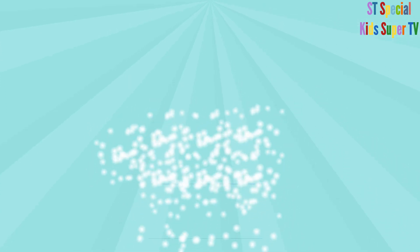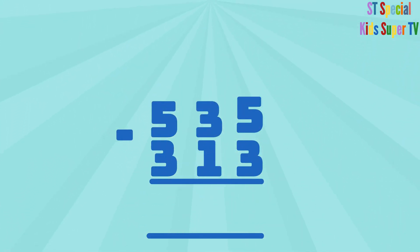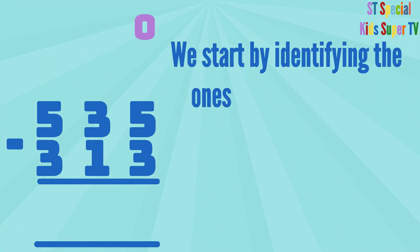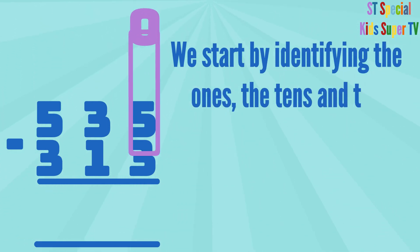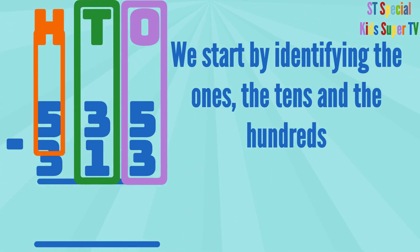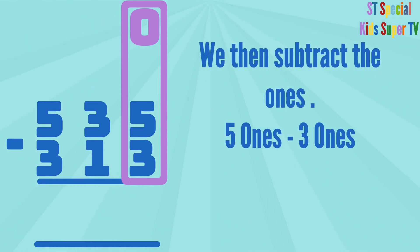Let's now calculate 535 minus 313. We start by identifying the 1s, the 10s and the 100s. We then subtract the 1s: 5 ones minus 3 ones.